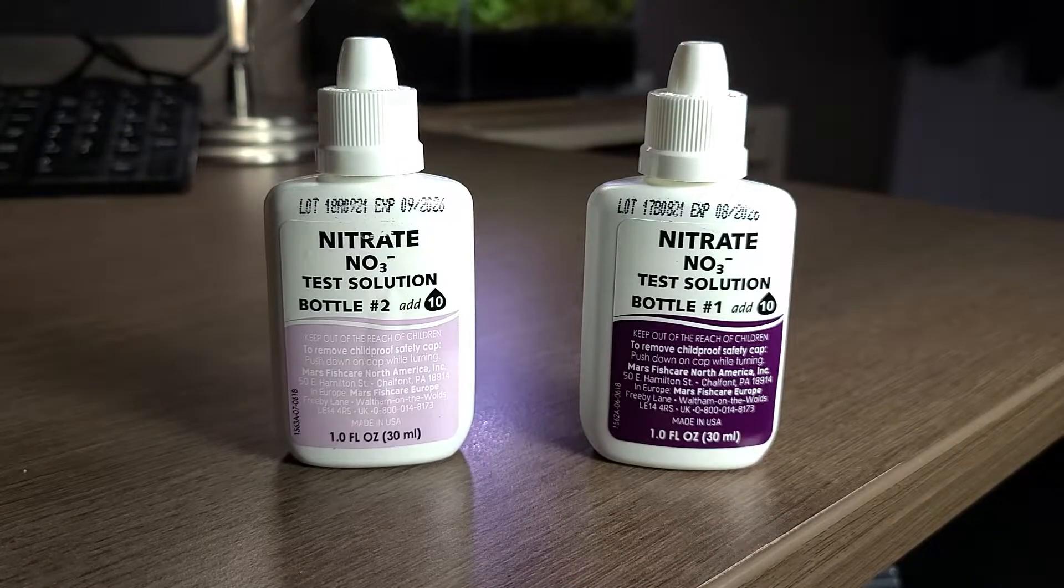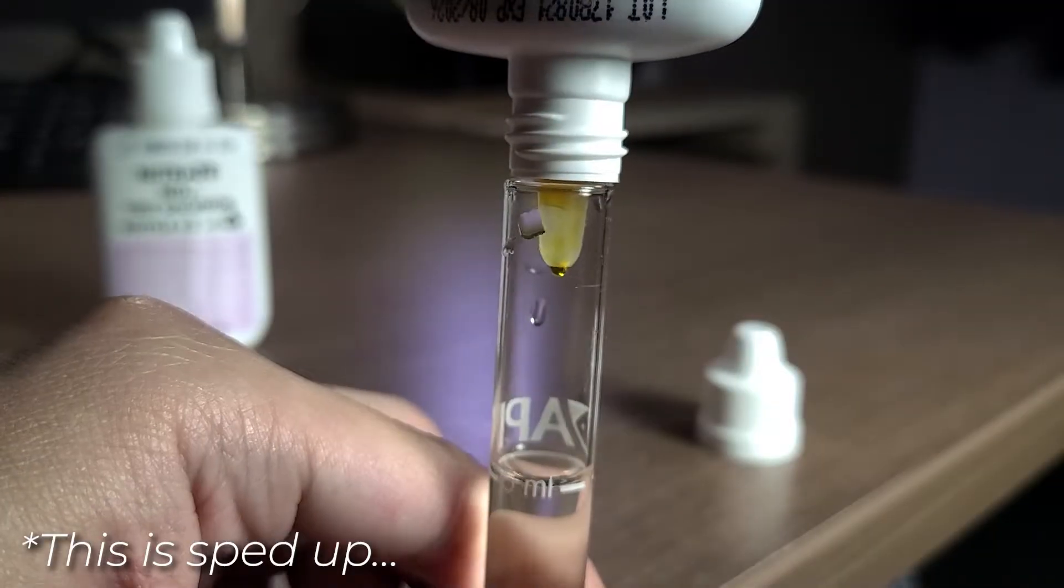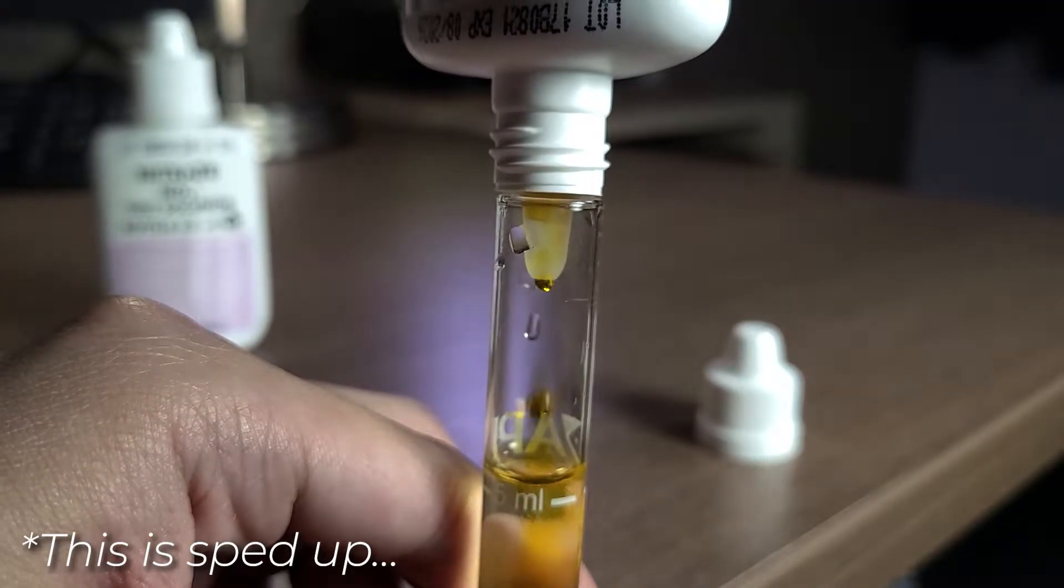For nitrate, we also have two bottles just like the ammonia test. For bottle number one, we will need to add 10 drops and shake the tube a bit.